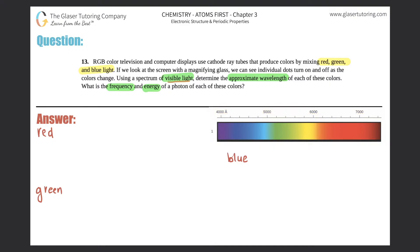Let's look at red. The good thing is they say approximate, so we don't have to be spot on — just somewhere in the ballpark. Red looks like it would be around 7000, but let's make it easy and use 6800 angstroms for red. Anything basically in that range of the spectrum counts as red.